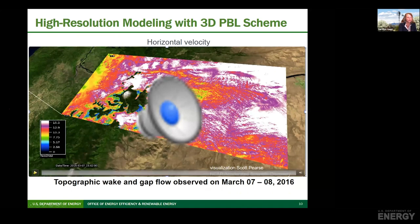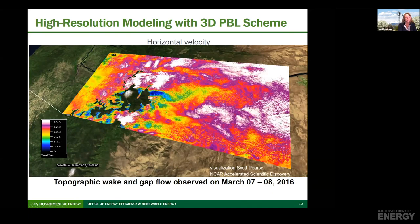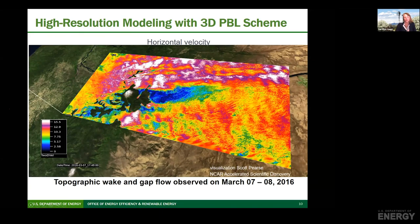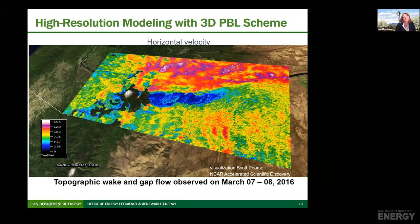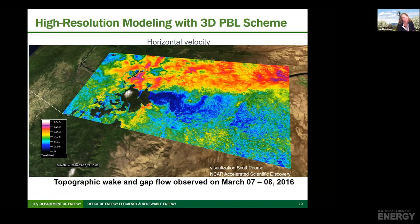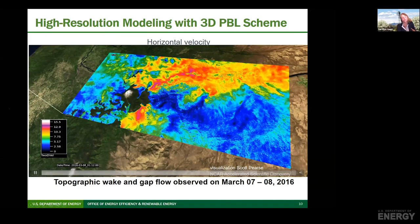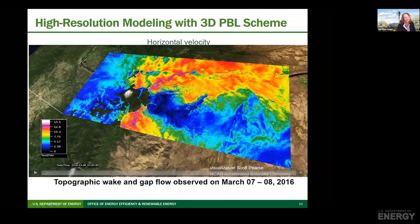We are also developing a fully three-dimensional planetary boundary layer scheme. When we use that within WRF, we're able to capture details of the meandering wake in the lee of Mount Hood. You can also look along the edges and see standing waves along the ridge, as well as some waves — some of them standing, some of them traveling. This very complex flow can be simulated because of this 3D PBL scheme that we've developed.